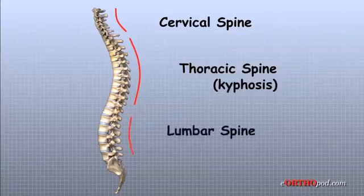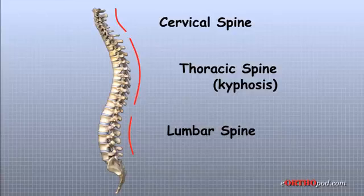The low back, also called the lumbar spine, curves slightly inward. An inward curve of the spine is called lordosis.